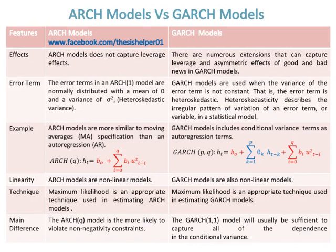The error terms in an ARCH(1) model are normally distributed with a mean of zero and a variance of sigma-i-squared, that is, heteroskedastic variance. Whereas, GARCH models are used when the variance of the error term is not constant — that is, the error term is heteroskedastic.